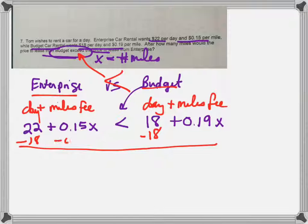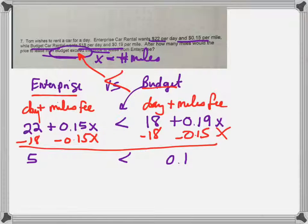I'll go ahead and subtract 18 from both sides. It really doesn't matter which side you move the variables to. So I subtracted 18 from both sides and I also subtracted 0.15x from both sides. That left me with 5 is less than 0.14x.